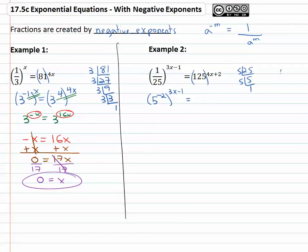And the one twenty five can also be factored, divide by five, twenty five times, divide by five, five times, divide by five once. One twenty five is five cubed to the four x plus two power.